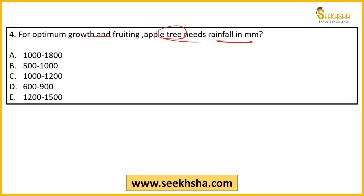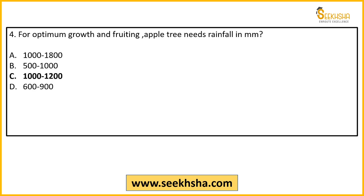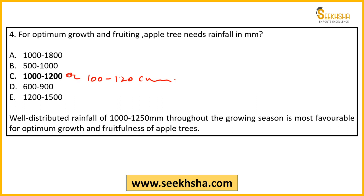To convert mm to cm, divide by 10; to convert cm to mm, multiply by 100. The optimal rainfall for apple is 1200 mm, which you can also say is 100–120 cm. This should be well-distributed rainfall during the growing season — not at a particular time — and this impacts apple quality.